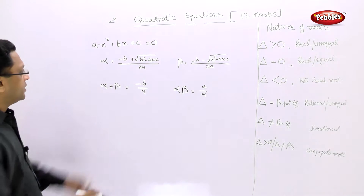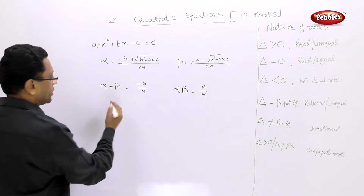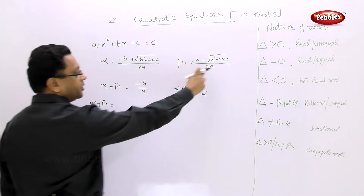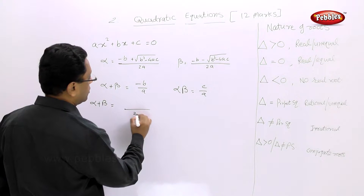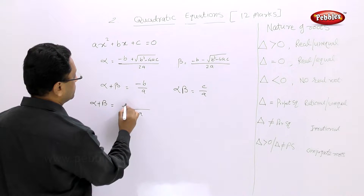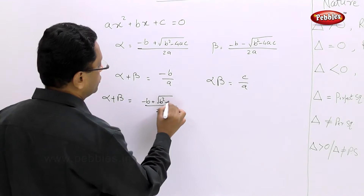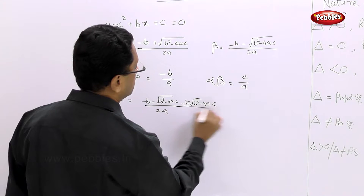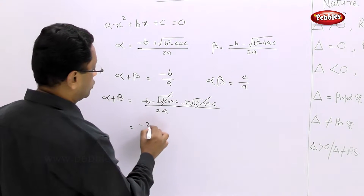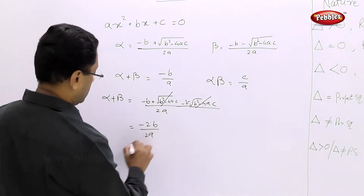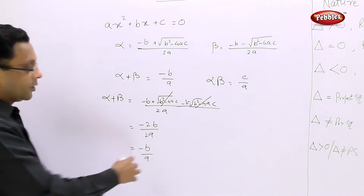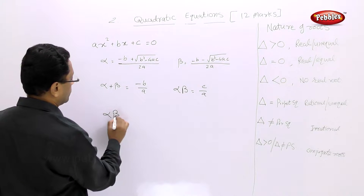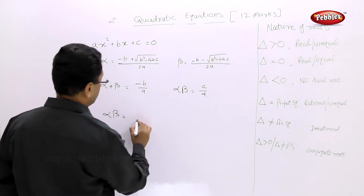We can verify this. Alpha plus beta equals this plus this. Since the denominators are common, we take 2a. We get (-b + √(b²-4ac) + (-b - √(b²-4ac))) / 2a. The square root terms cancel, and -b - b gives -2b, so we get -2b / 2a, which simplifies to -b/a, confirming our formula.